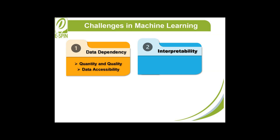Interpretability is another challenge — particularly advanced models like deep neural networks function as black boxes. Opaque decision-making makes it difficult to understand how a model arrives at a specific decision or prediction, which complicates trust and accountability. In industries like finance and healthcare, interpretability is essential for meeting regulatory requirements.